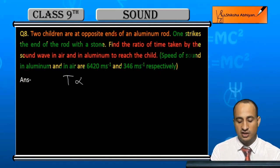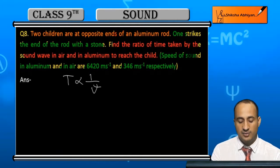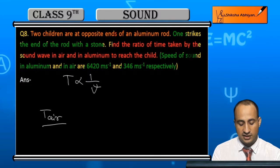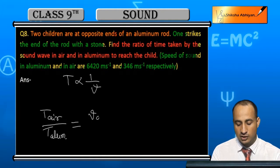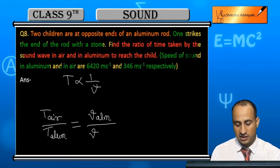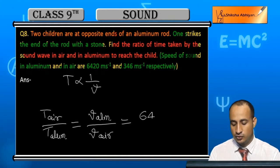We know that time is inversely proportional to velocity. So, time in air divided by time in aluminum equals velocity in aluminum divided by velocity in air, which gives us the ratio of the two travel times.